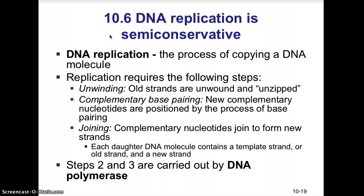Once the DNA molecule is open, another enzyme called DNA polymerase comes in. DNA polymerase reads each of the nucleotides on the parental DNA strand and adds new nucleotides following the rules of base pairing. Complementary nucleotides then join to form the new strands. Each daughter DNA molecule contains a template strand — the old strand — and a new strand, giving you that semi-conservative structure. Steps two and three are carried out by DNA polymerase.